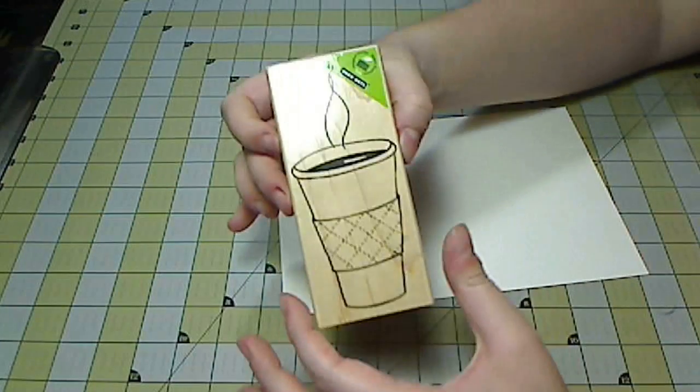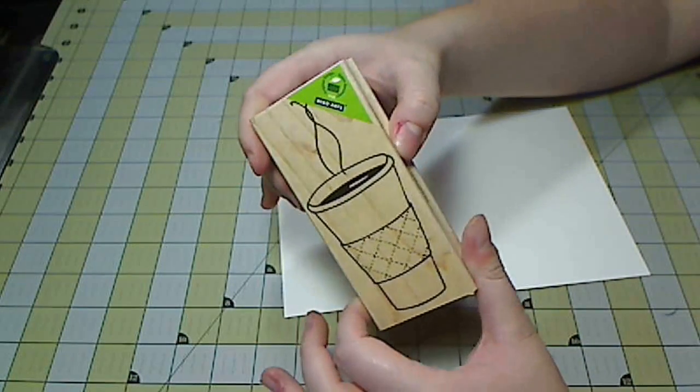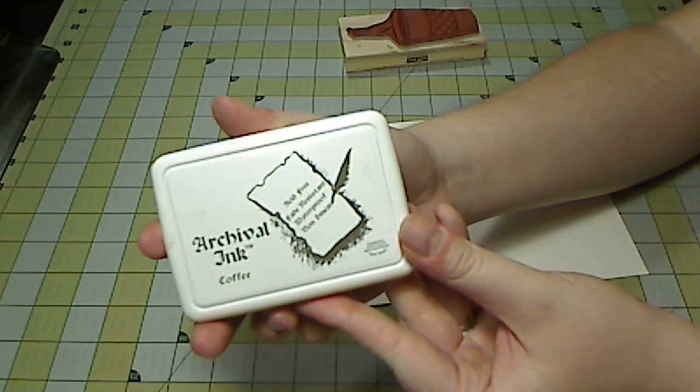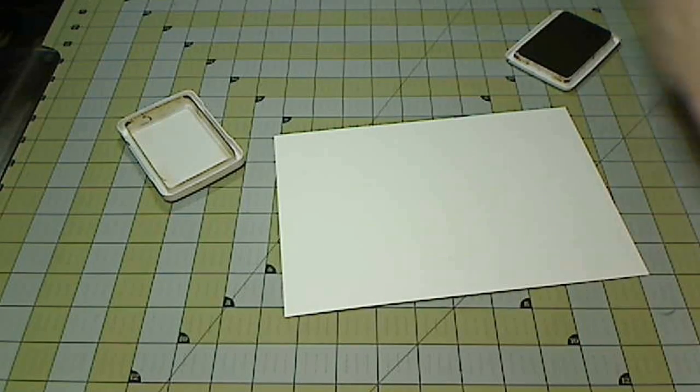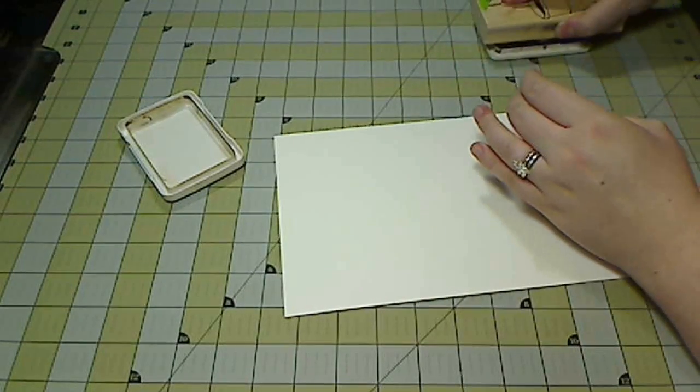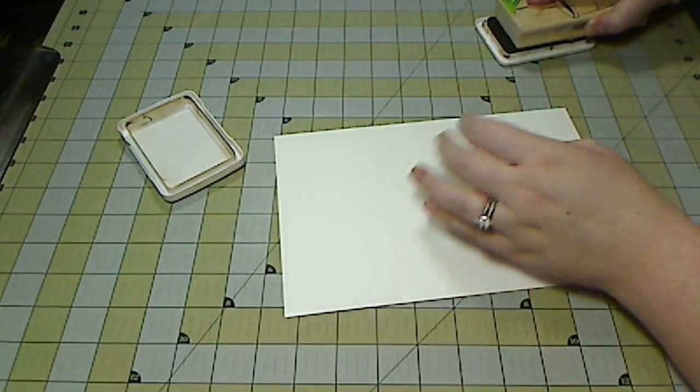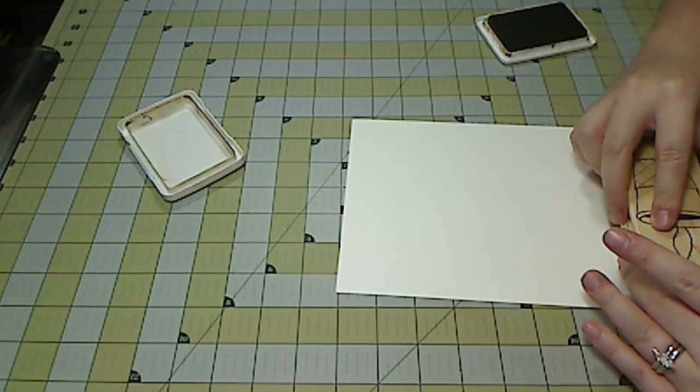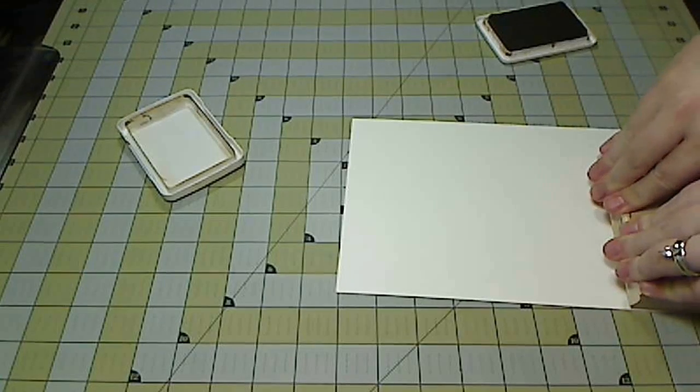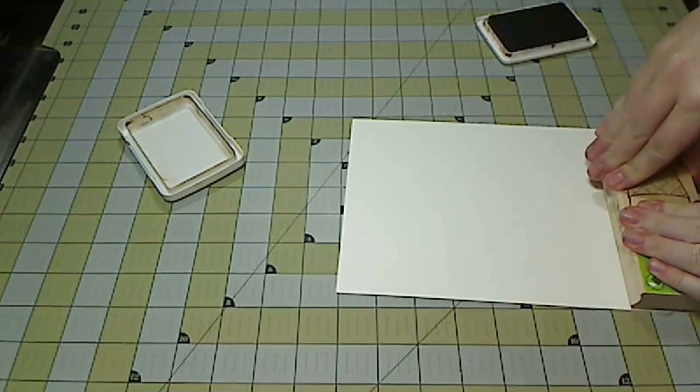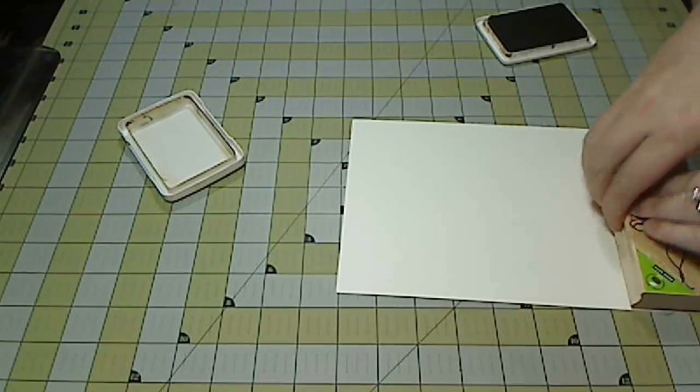Now I am getting a piece of watercolor paper and this coffee cup stamp from Hero Arts and I'm going to stamp it in archival ink and coffee on the watercolor paper. So I'm making sure I ink up my stamp really well and I'm going to be very firm with my pressure when I put it on the watercolor paper to make sure I get good contact with my image.